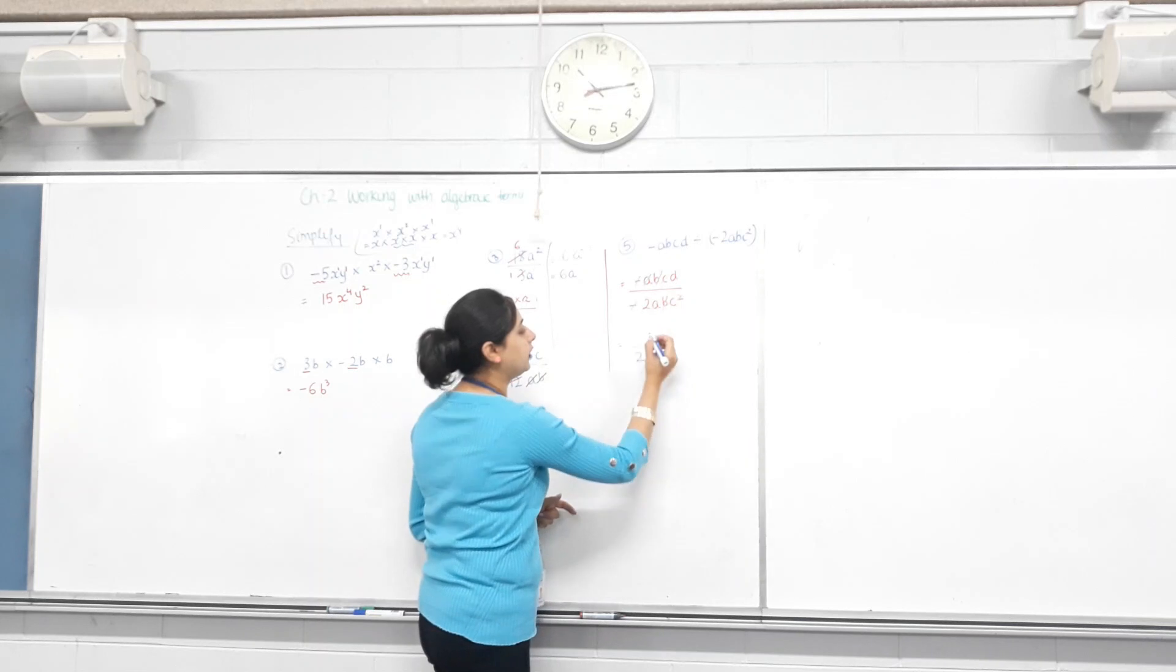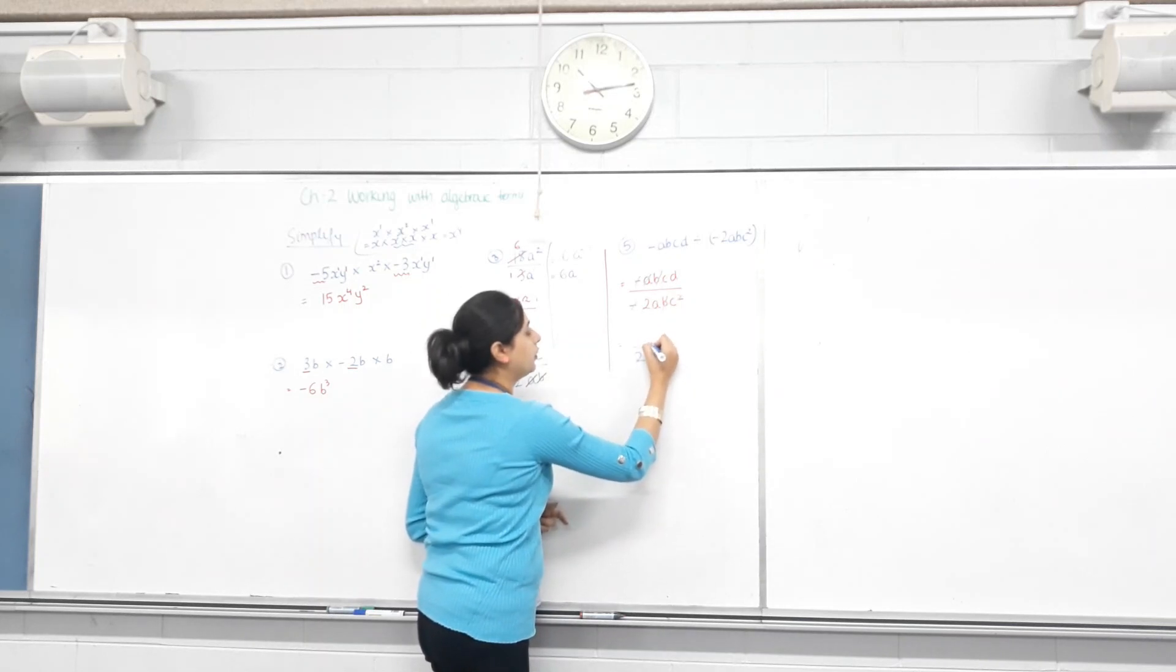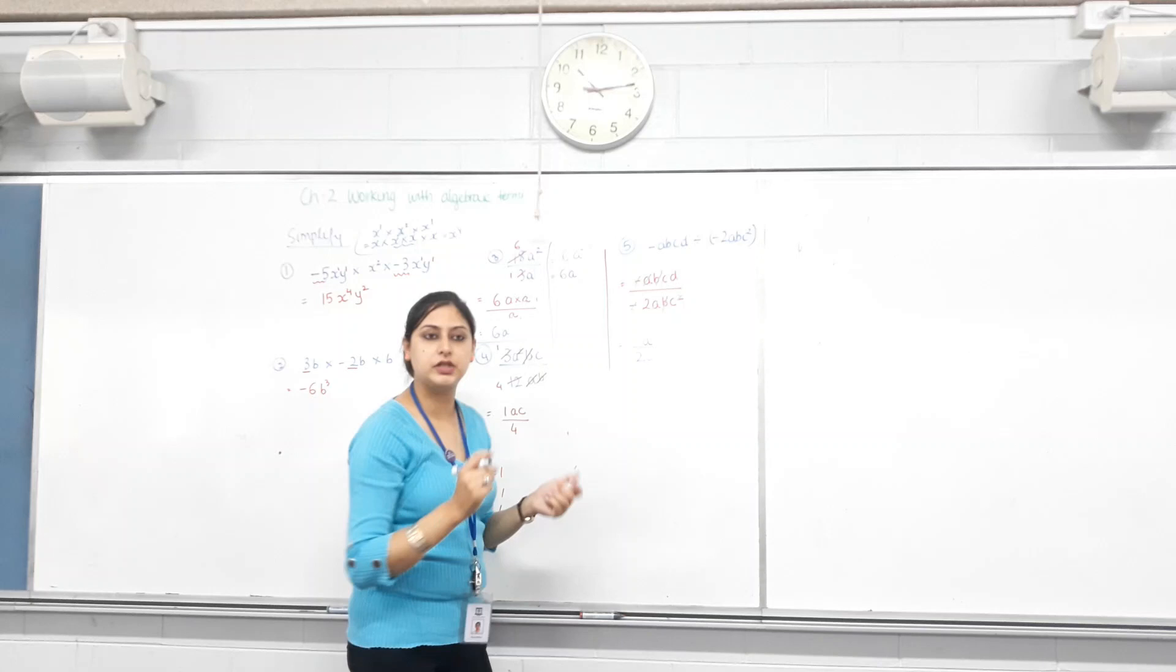Then, D. Is there anything to cancel D with? No. So, do I need to write 1D over 2C? No. So, it's D over 2C.